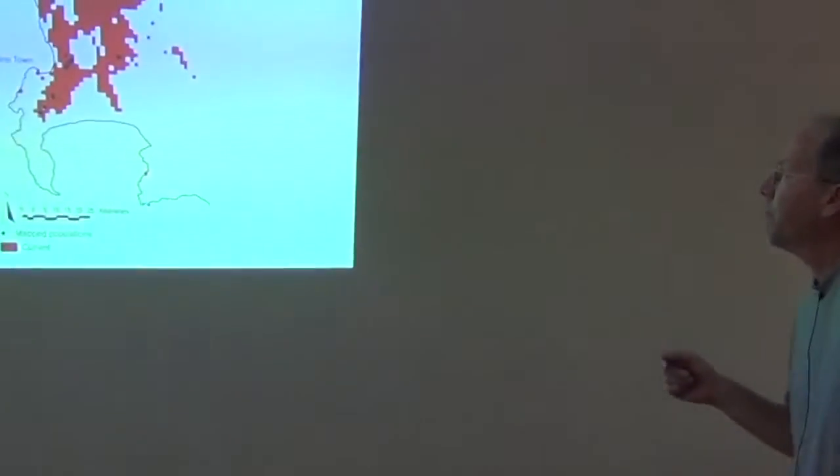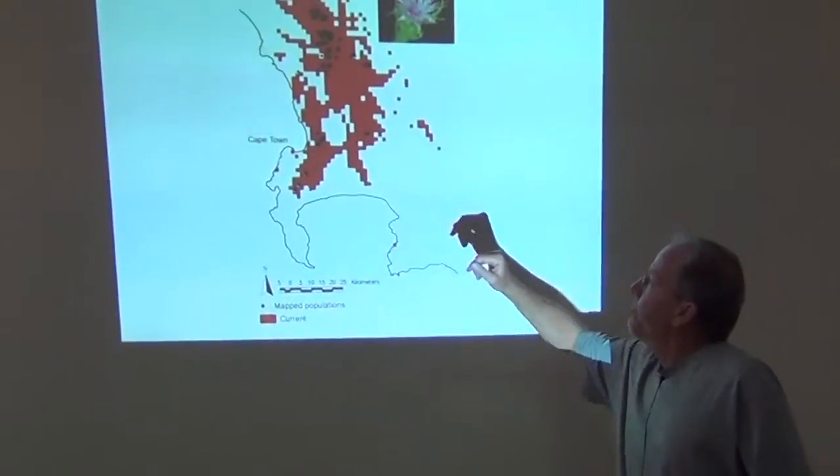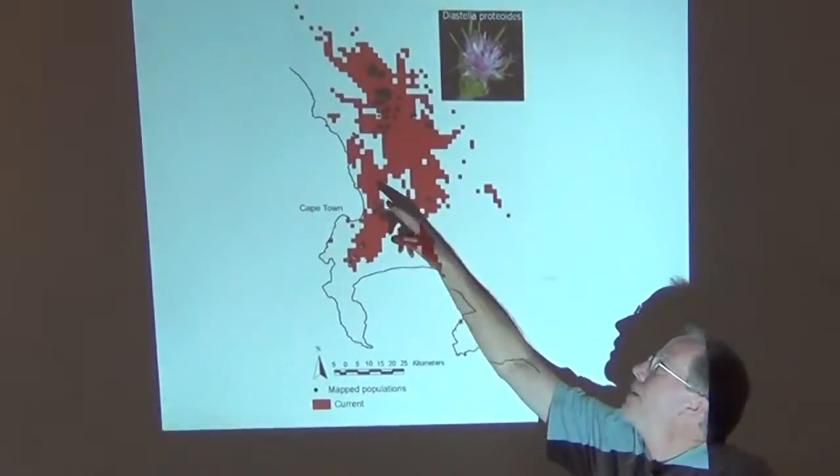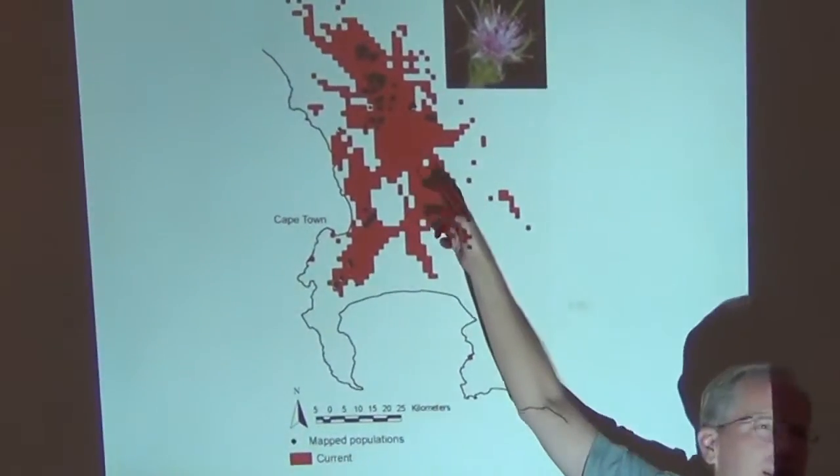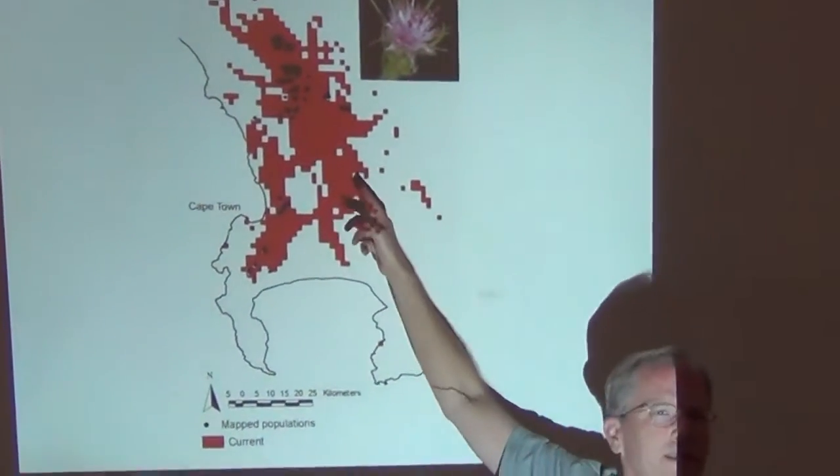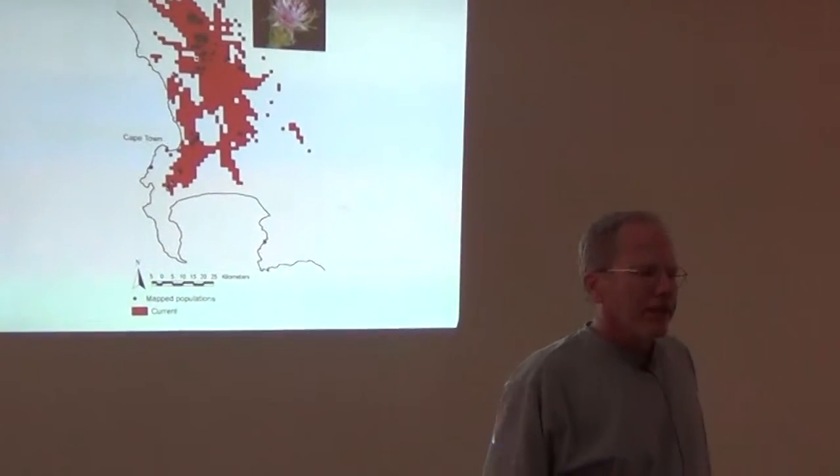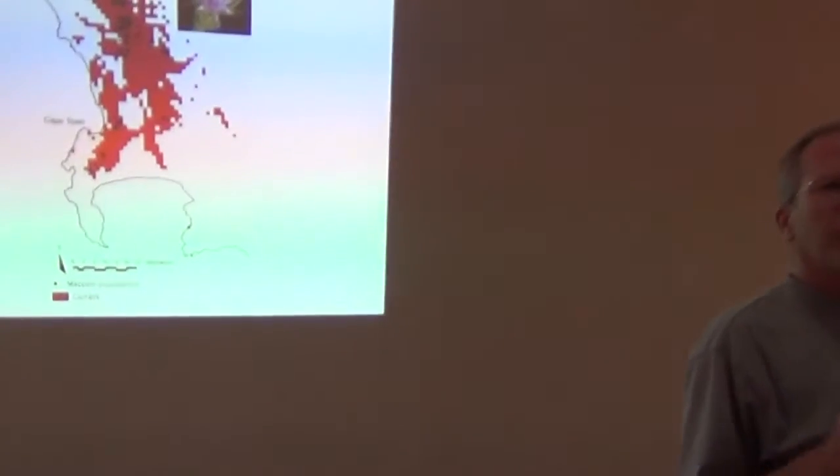The question is, when we look at these models, do we consider the previous range of the species? And that gets to the other question, which is what gives us much confidence that these models are actually representing the real world? So one of the things that you might notice about this model is that the species has been observed here and up here. But it's never been recorded in here. But the model says that the species should be occurring there.